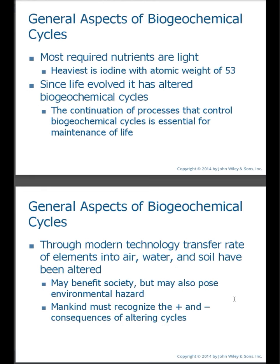Let's talk about some general aspects of biogeochemical cycles. Most required nutrients are light — they're on the left-hand side of the periodic table. The heaviest nutrient is iodine, which has an atomic weight of 53. Since the presence of life has made its appearance, it has altered how chemicals cycle through the different earth systems. The continuation of processes that control biogeochemical cycles is essential for the maintenance of life — if we were to stop the biogeochemical cycle, we would not have the right amount of nutrients in the right concentration at the right time.